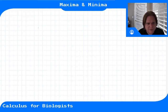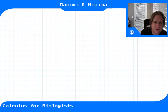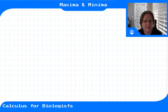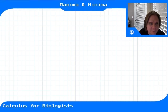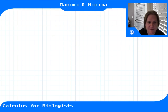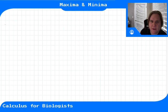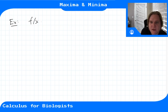In this video we'll do another example to clarify the distinction between local maximums, local minimums, global maximums, and global minimums. Let's do an example with f(x) = x³ - x.